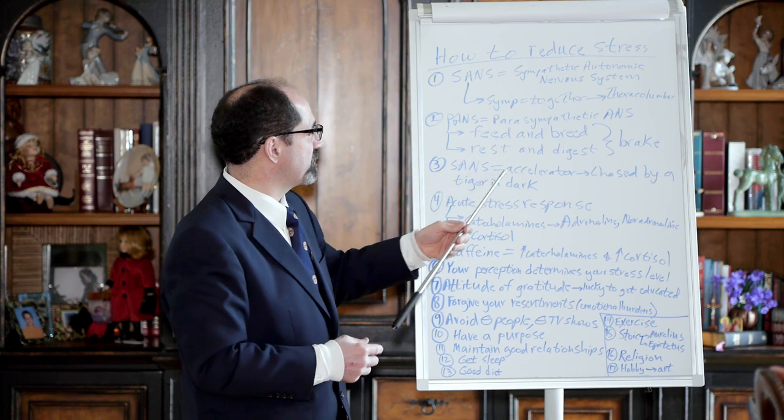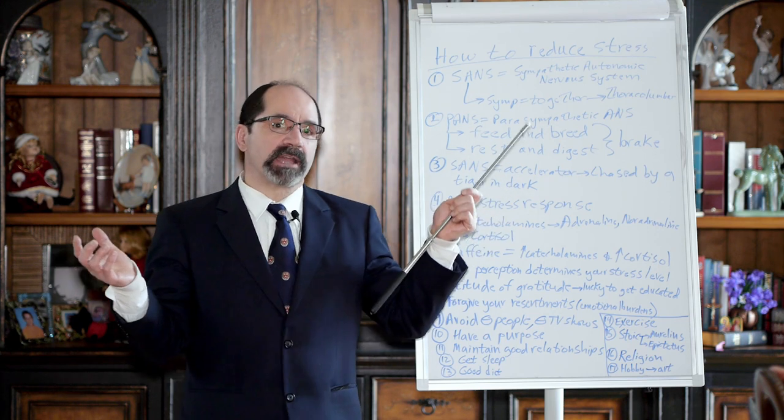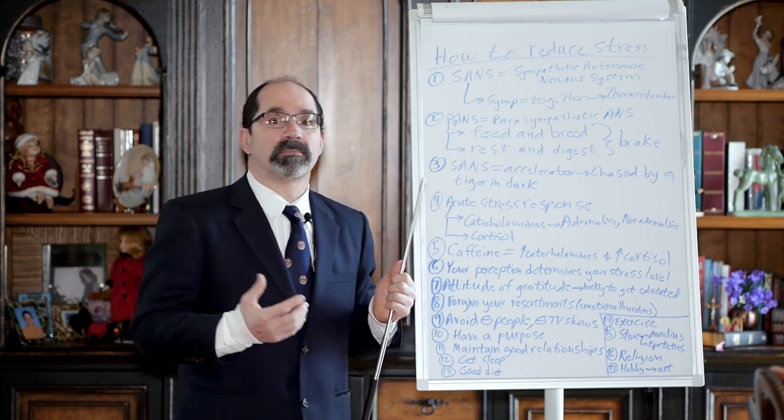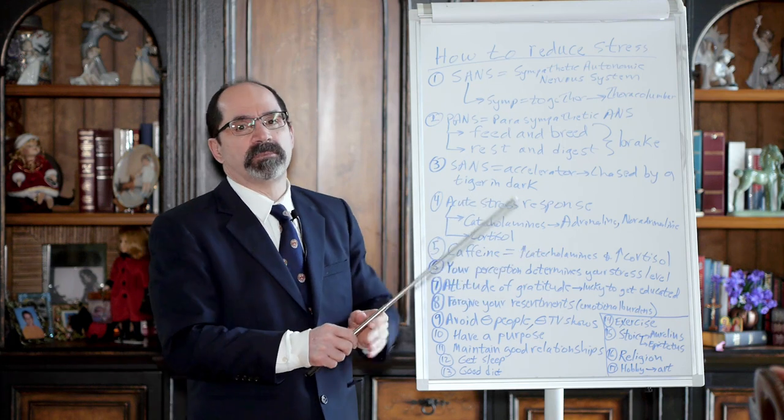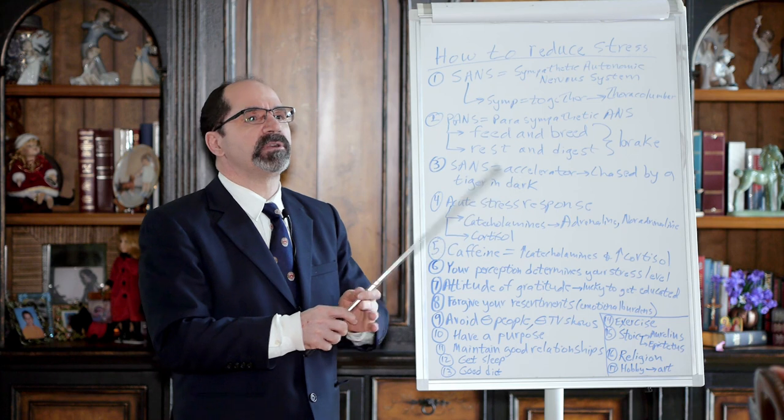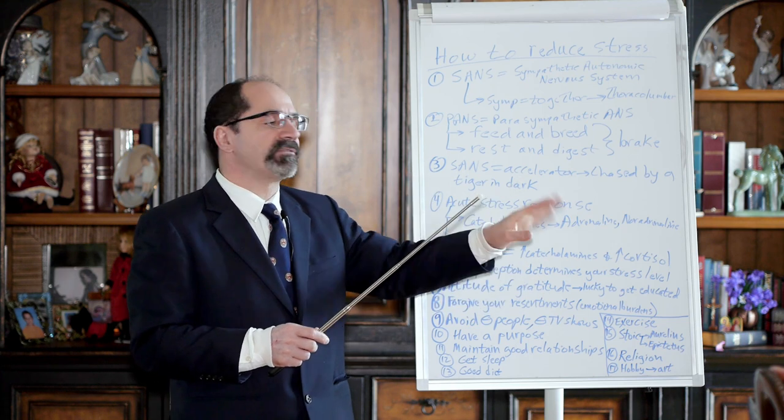The way you can remember most things for SANS, sympathetic autonomic nervous system, is being chased by a tiger in the dark. Your eyes dilate, you've got to get blood flow to your muscles. You shut down everything long-term, you don't need to worry about your immune system, you don't need to worry about an infection, you need to survive the next 5-10 minutes.